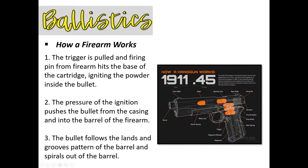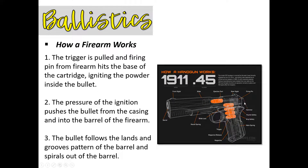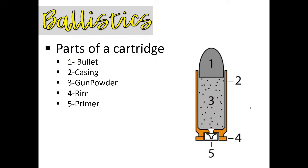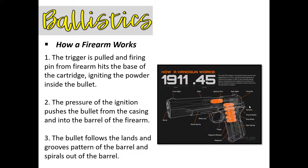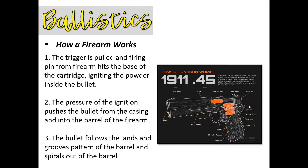Now let's talk about how the firing process works. Basically, the trigger is pulled. The firing pin at the back hits the base of the cartridge and ignites the gunpowder inside. That builds pressure, and the pressure of the ignition propels the bullet forward from the casing. It moves through the barrel, and as it does that it creates what's called rifling. Then the casing is ejected.